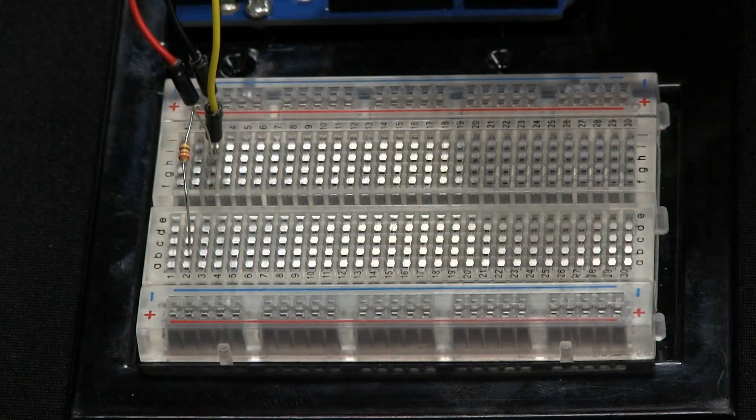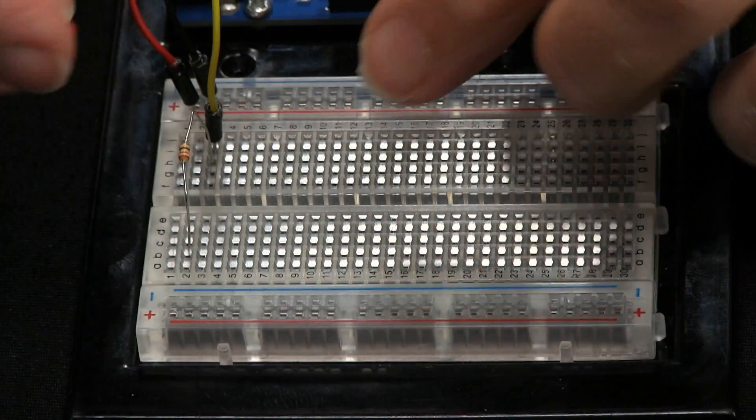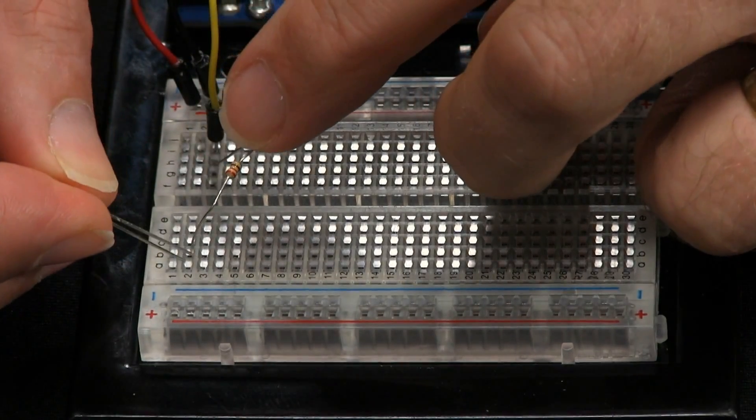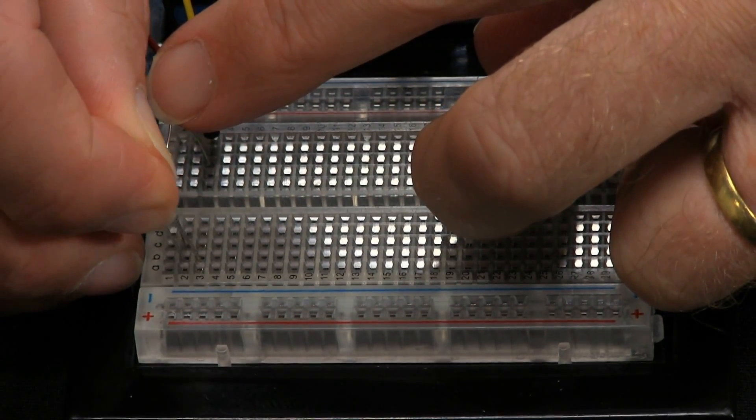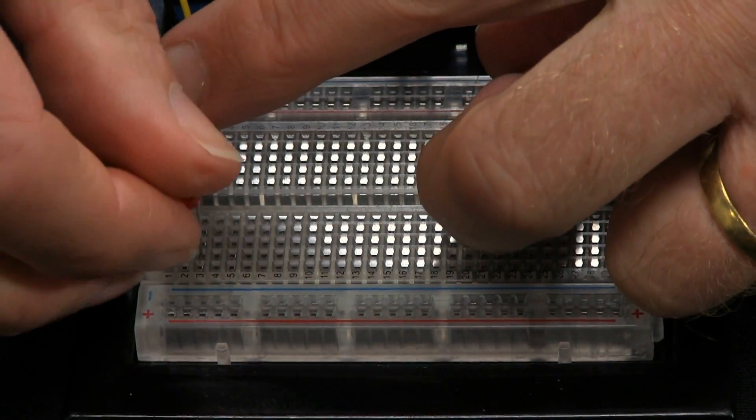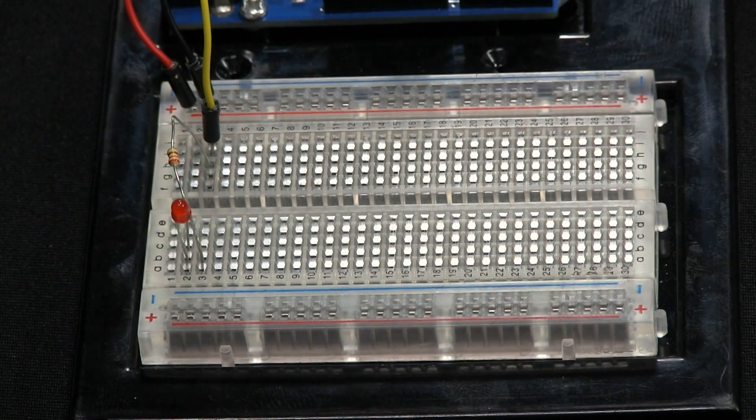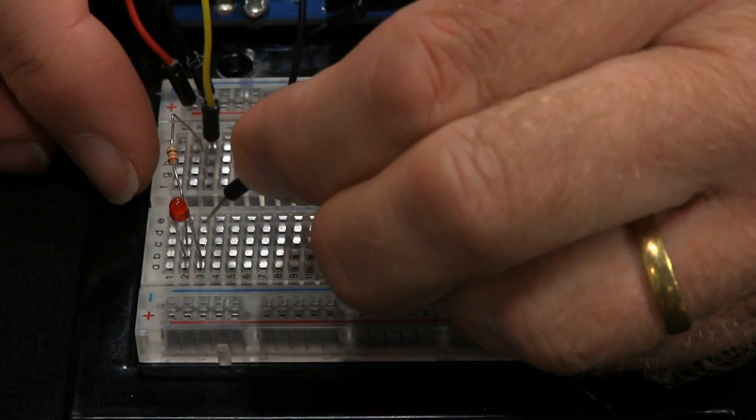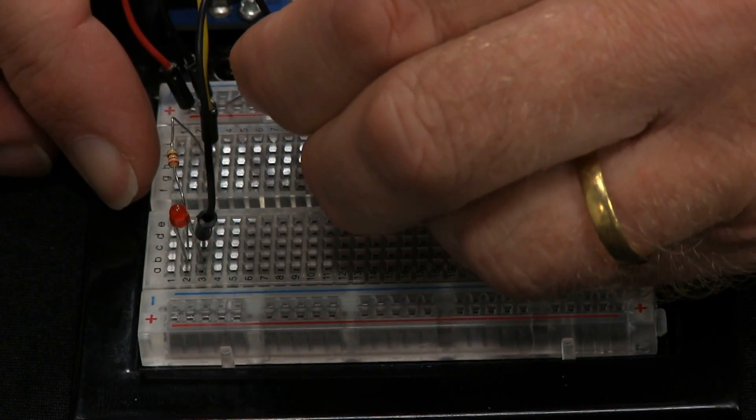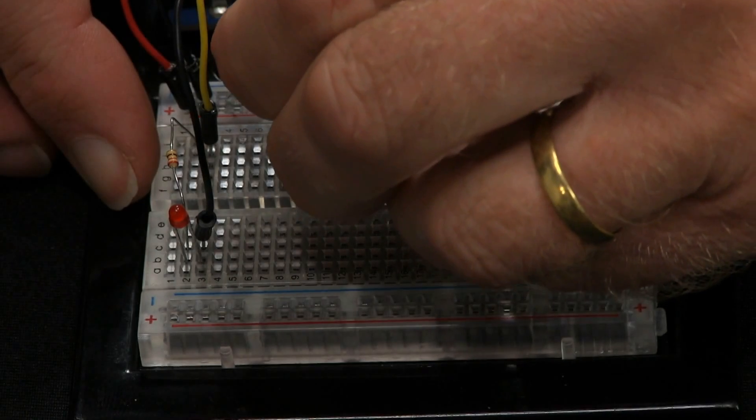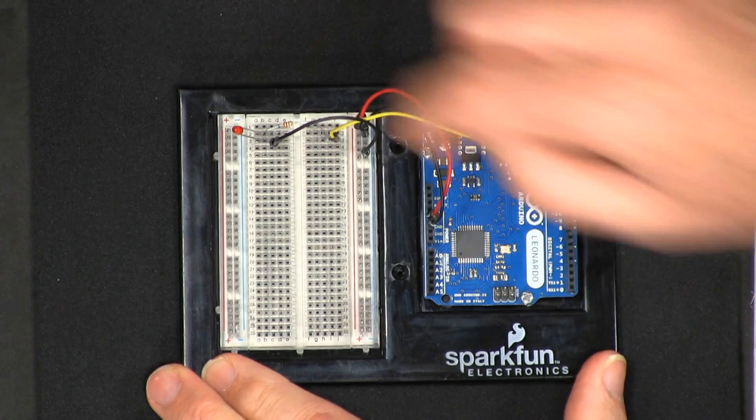Now this is going to be the positive end, so we need the positive end of the LED which is the longer of the two leads. So into that row we connect the positive, and into whichever row we like, which we'll say is just the row next to it, we plug in the negative. And then we will take another lead and connect that negative pin up to the negative on the power distribution bus. So the LED is now connected.